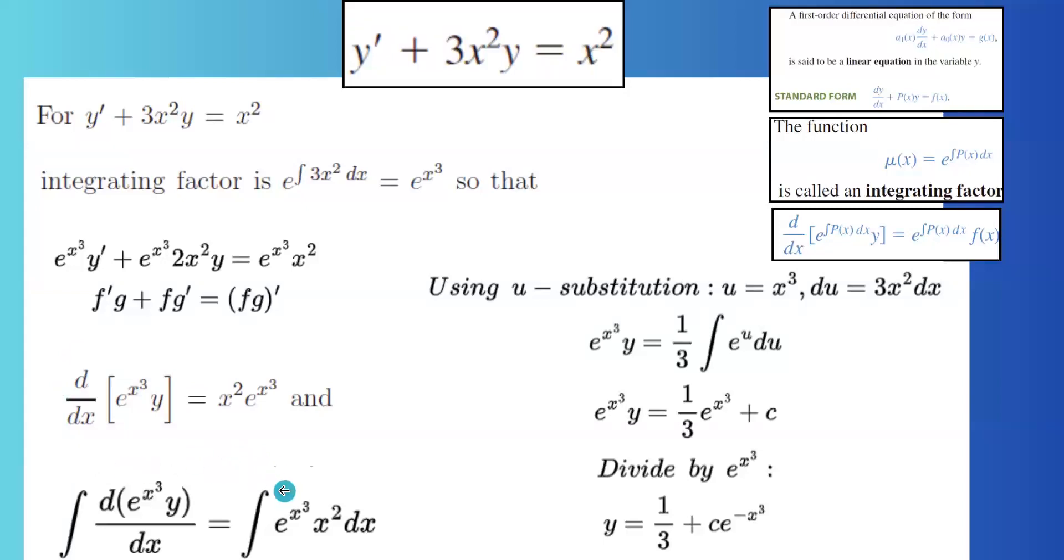Take the integral of both sides. The integral of differentiation they get cancelled out. On the left hand side you end up with e to the x cubed y. On the right hand side you have the integral of e to the x cubed x squared dx.